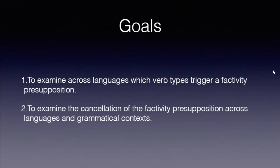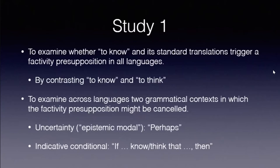The first way to study this was to contrast 'to know' and 'to think.' 'To know' is a factive verb — when I say 'John knows that P,' I must believe that P is the case, otherwise I would say 'John believes that P.' We wanted to know whether this well-known contrast in English holds across other languages. We also looked at cancellation under epistemic modals and the indicative conditional.